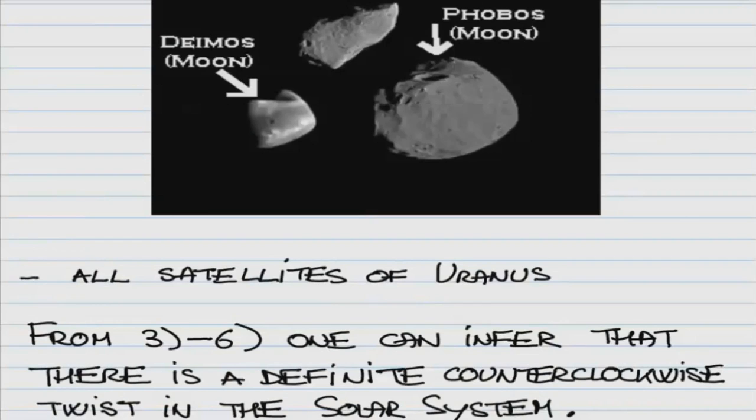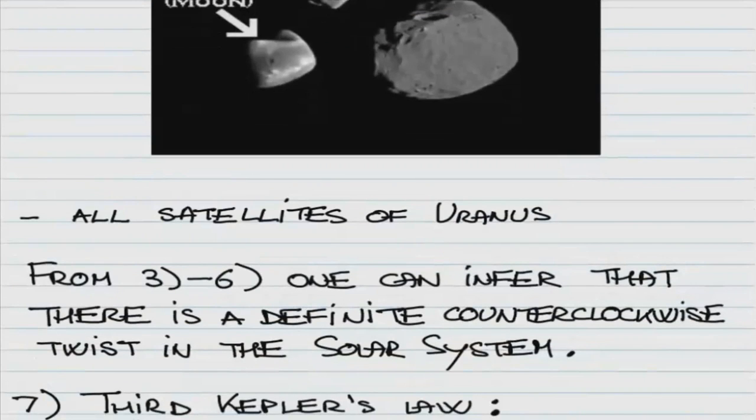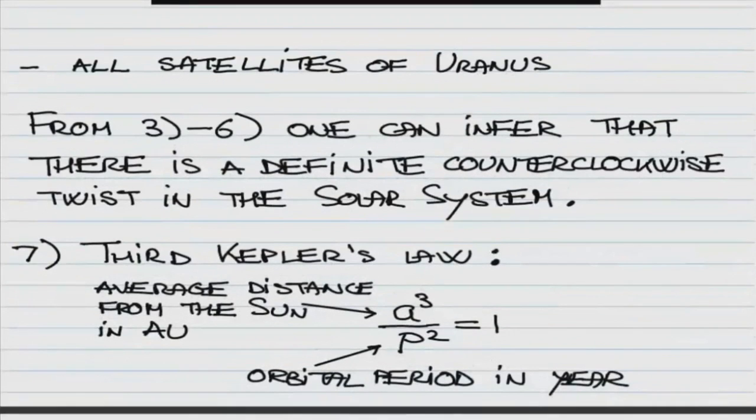And also, all satellites of Uranus don't have that property. But as you saw earlier, Uranus itself has its rotational axis at almost 100 degrees relative to the perpendicular to the ecliptic. So from all these points where we discussed that there is overwhelming counterclockwise rotation or spin, we can conclude that there is a very definite counterclockwise twist in our solar system.